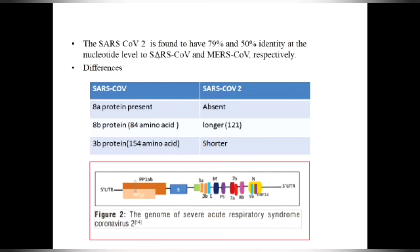SARS-CoV-2 has 79% similarity at the nucleotide level to SARS-CoV and 50% to MERS-CoV. Key differences between SARS-CoV (2002) and SARS-CoV-2 (2019) include: the 8A protein is present in SARS-CoV but absent in SARS-CoV-2. The 8B protein, which is about 84 amino acids long in SARS-CoV, is longer — about 121 amino acids — in SARS-CoV-2. The 3B protein, which is 154 amino acids in SARS-CoV, is shorter in SARS-CoV-2.